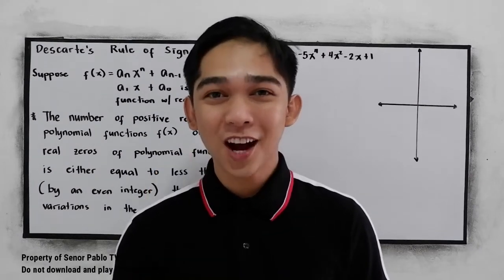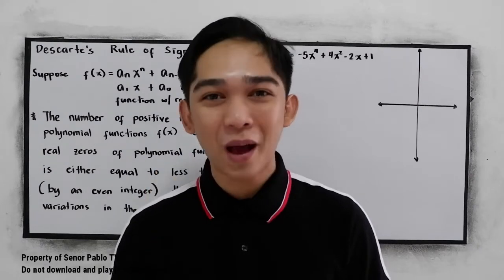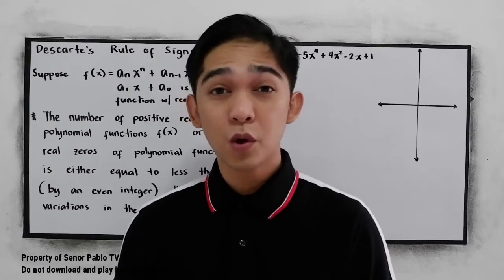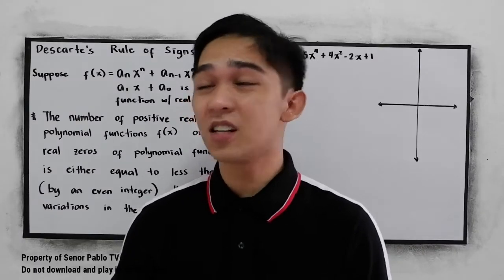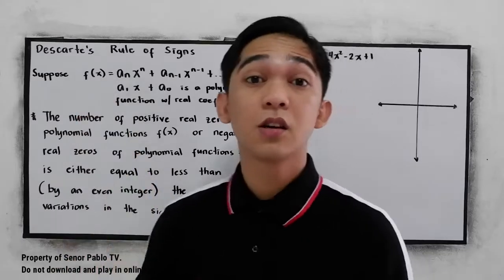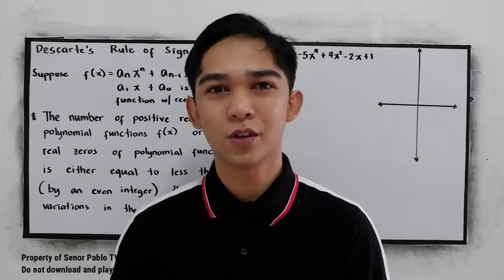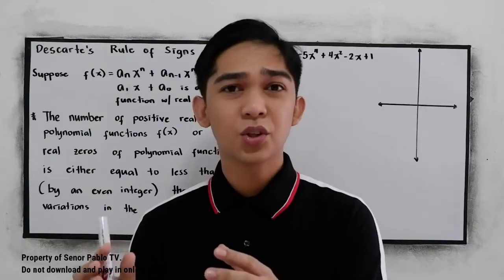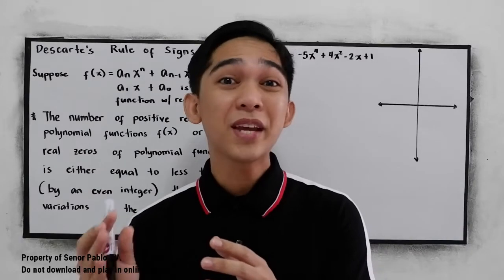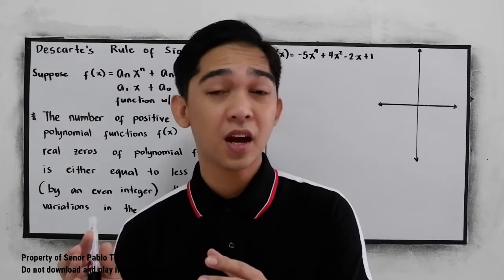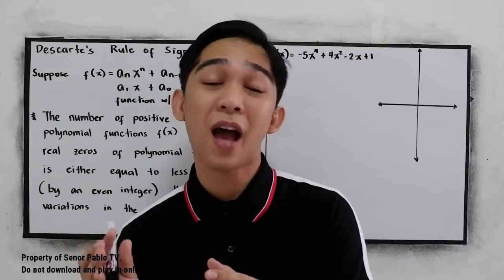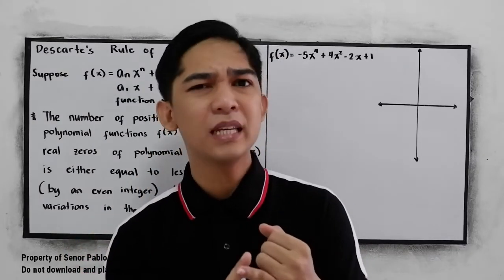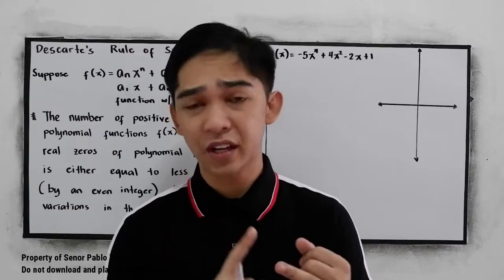Good day everyone! Welcome to Senor Pablo TV. For today's tutorial video, we will be discussing Descartes' Rule of Signs. We are going to use these rules to determine how many real zeros are in a polynomial function — how many positive real zeros and how many negative real zeros.